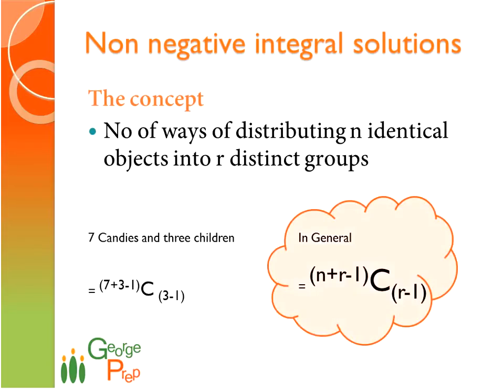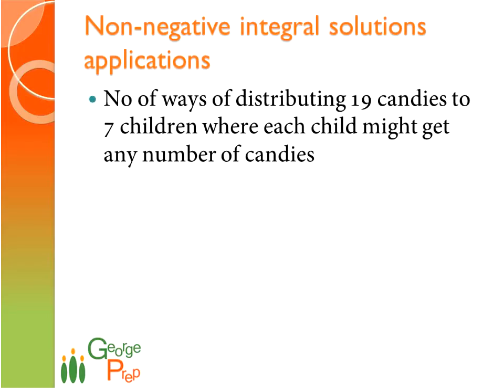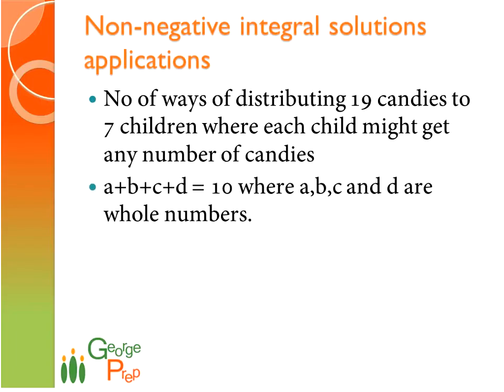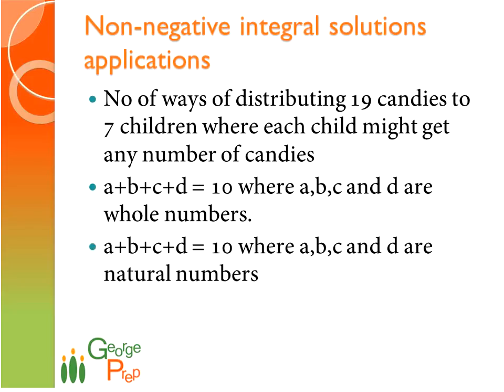Many questions could be asked testing you on this concept. Some of the questions could be: number of ways of distributing 19 candies to 7 children where each child might get any number of candies; A plus B plus C plus D equal to 10 where A, B, C, D are whole numbers; or A plus B plus C plus D equal to 10 where A, B, C, D are natural numbers.